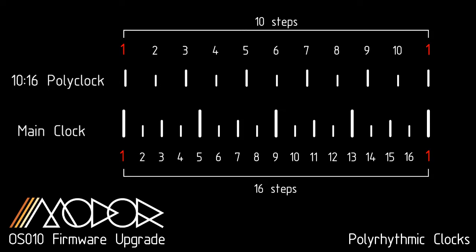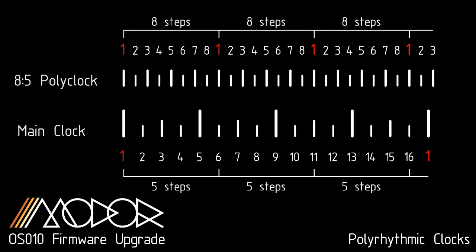But let's look at a 10 over 16 polyrhythmic clock. The instruments assigned to this clock will play 10 steps stretched over the time needed for the main clock to play 16 steps. Or an 8 over 5 polyclock will play 8 steps in the time the main clock needs for 5 steps. You can also see here that the polyclock restarts from step 1 every 8 steps, or every 5 steps of the main clock.